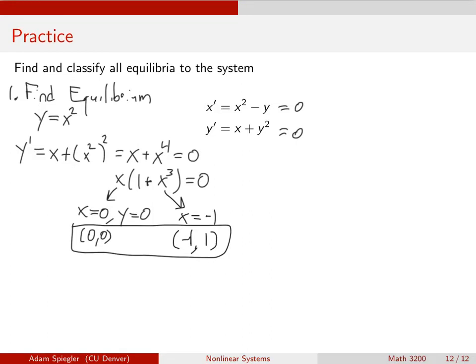Now what we want to do is determine whether those equilibrium are stable or unstable. So the next step in that process would be find the Jacobian. The Jacobian, I'll denote it J, is this matrix of partial derivatives.